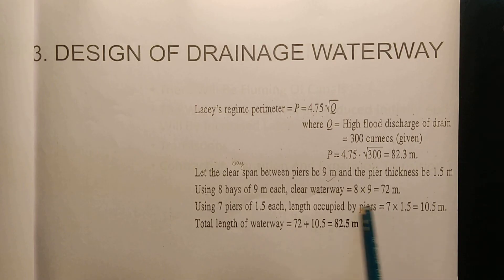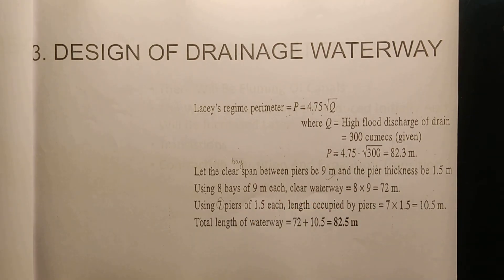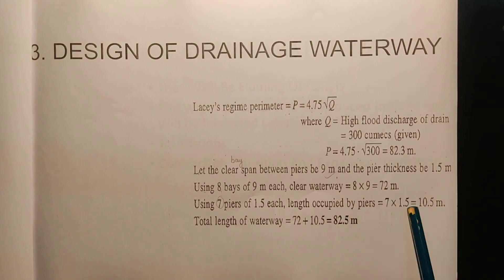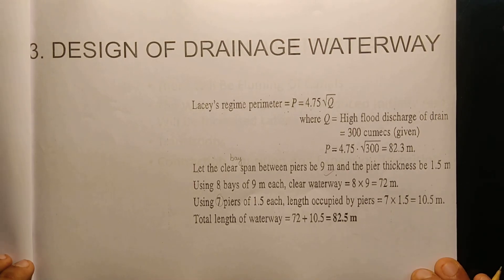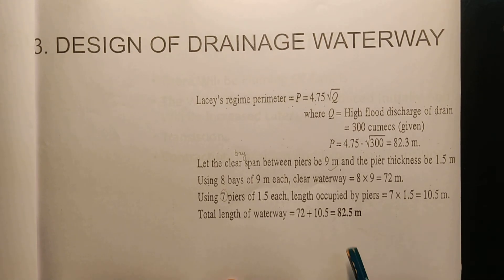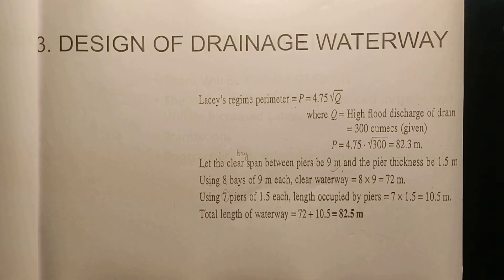So we have 8 bays. The total waterway length is 72 m plus 10.5 m, which is greater than 82.5 m. Therefore the total length of the waterway is approximately 82.5 m. We can raise 4 meters using the selected arrangement. We will add the bays and the piers, and divide and adjust the total length accordingly.